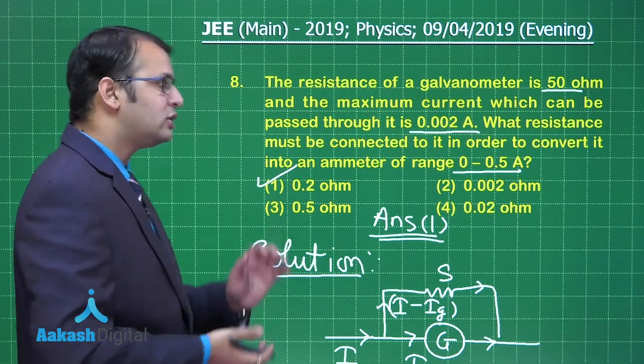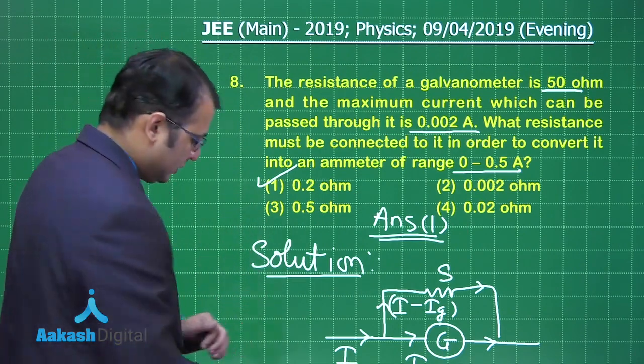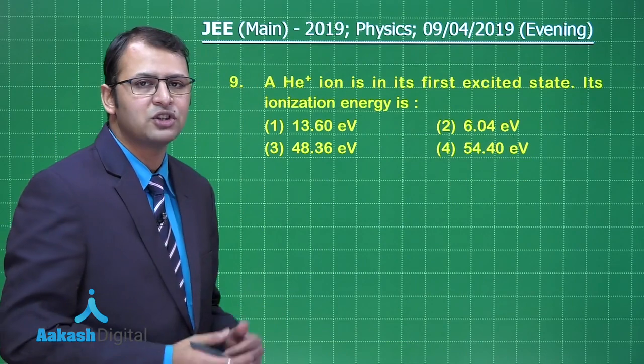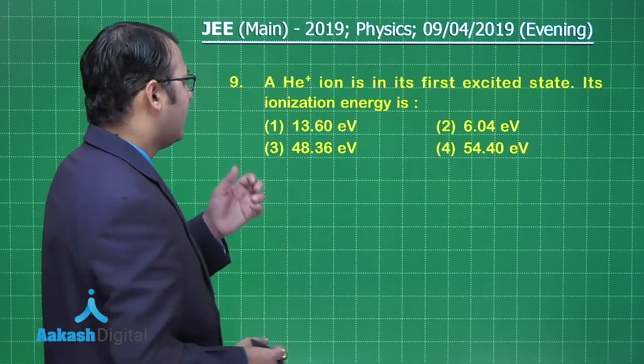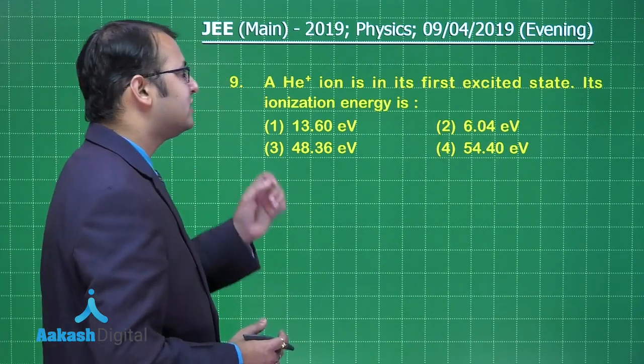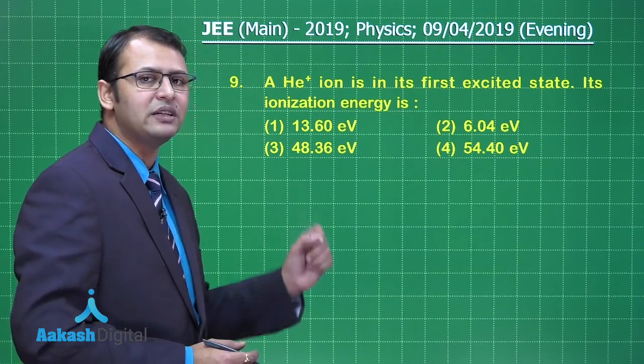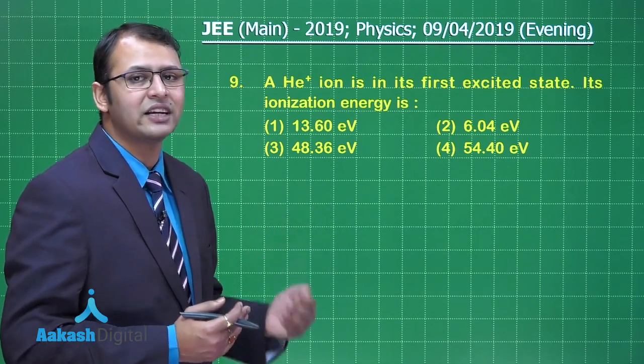Now let's move on to our next question. The question number nine you see belongs to section of modern physics. Here a helium plus ion is in its first excited state, that means electron is in second orbit. Its ionization energy is given by solution.